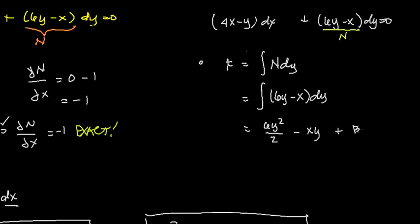this is dy, some constant of integration b(x) as a function of x. So as you can see here, we have N dy, then our constant of integration is in terms of some function of x, b(x). Then simplifying, we have 3y² - xy + b(x).